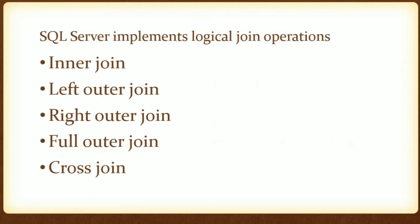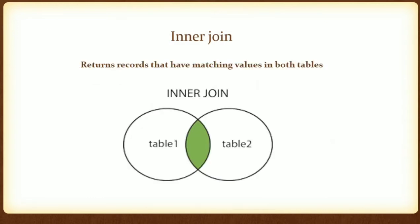Logical join operations include: inner join, left outer join, right outer join, full outer join, and cross join. Inner join returns records that have a matching value in both tables.